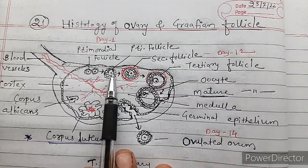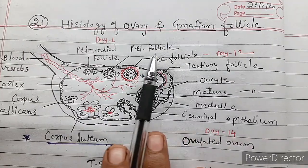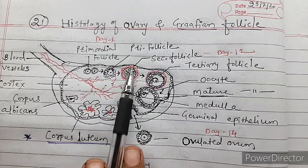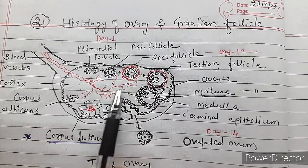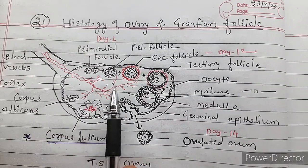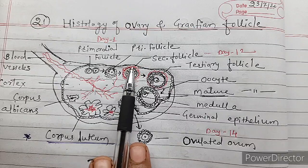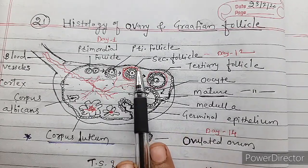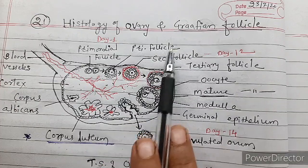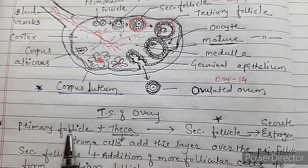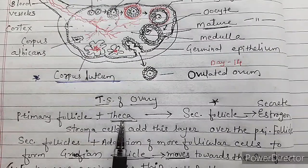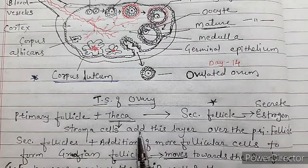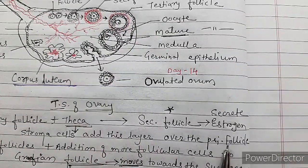These primary follicles grow into secondary follicles. What is the difference between primary and secondary follicle? The secondary follicle is also multilayered — many layers of follicular cells are there. But when the stroma forms a layer called theca around the primary follicle, there is conversion of primary follicle into secondary follicle. So: primary follicle plus theca layer equals secondary follicle. These theca layers are produced by the stroma cells.